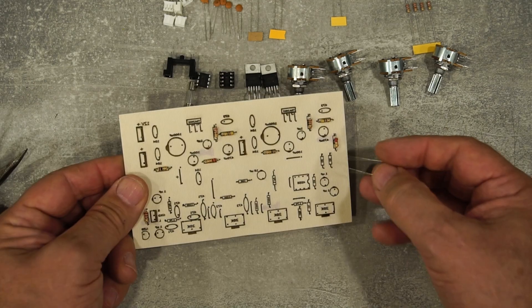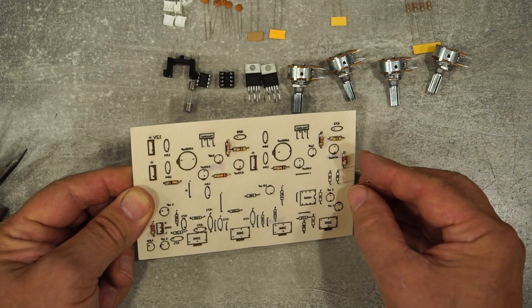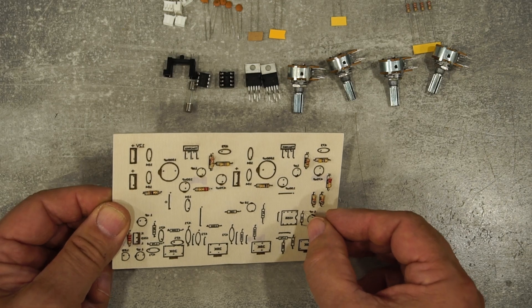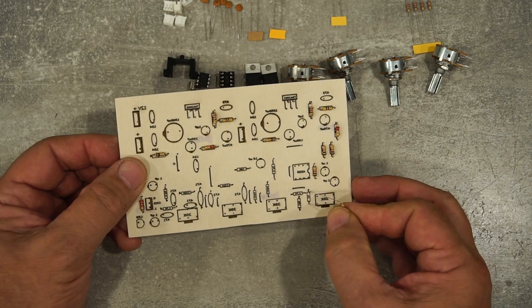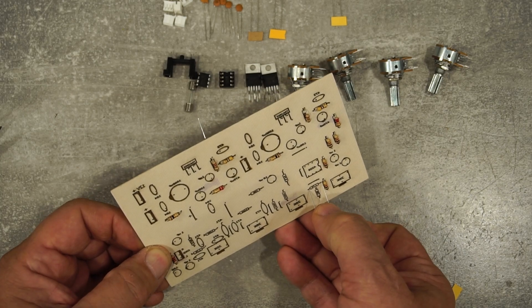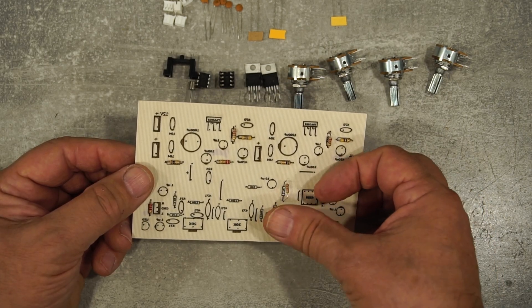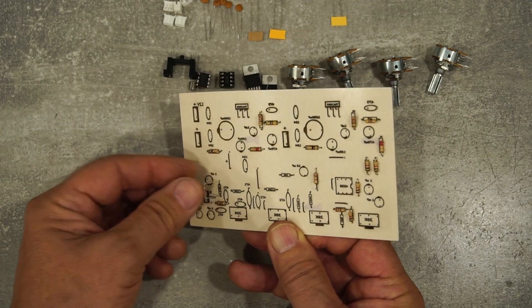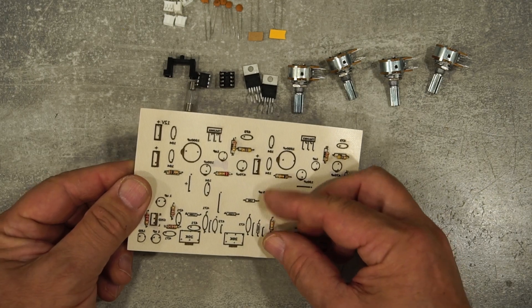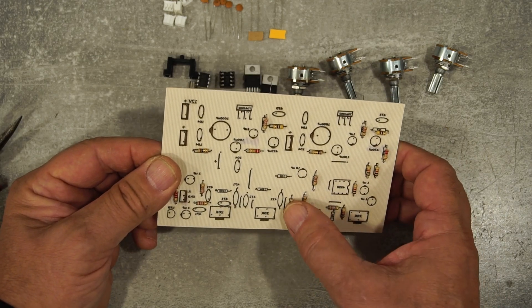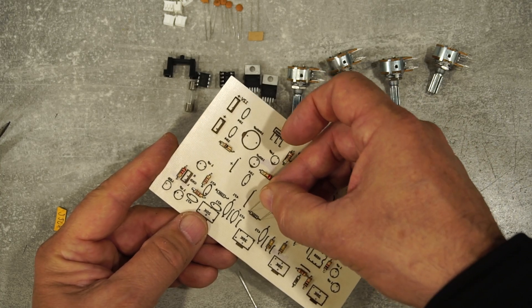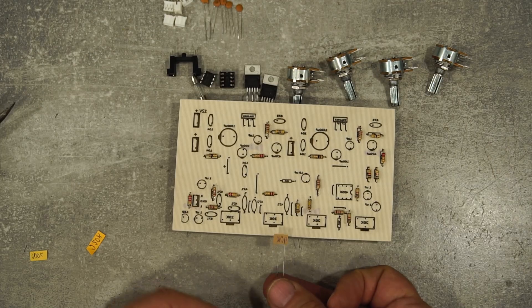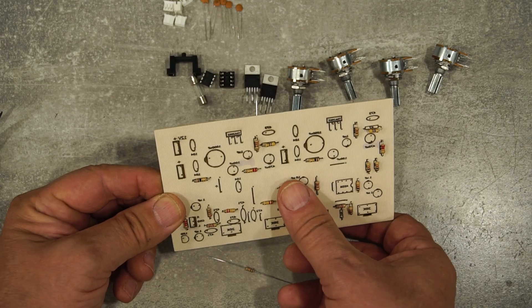Next are the 1k ohm resistors. Here comes the turn of the 2.7k ohm resistors. Now I'm adding the 100k ohm resistors. The next ones are the 220k ohm resistors. I also need to place the 10k ohm resistors.